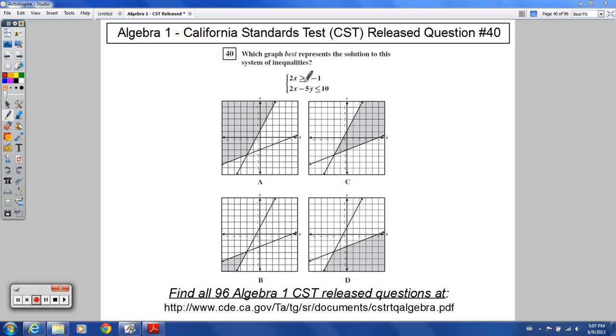So we've got 2x greater than or equal to y minus 1, and 2x minus 5y is less than or equal to 10. I'm going to draw a graph separate from what we see here. We're going to see which one the graph that we draw matches up with.